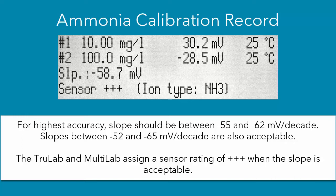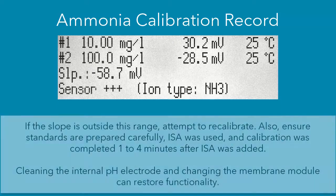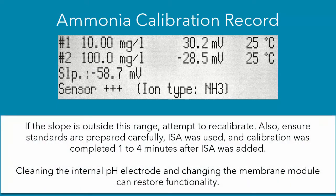So if it is between negative 55 and negative 62, then you have got a really good calibration. So for ours at negative 58.7 mV per decade, that is what we want. If you have a slope between negative 52 and negative 55 mV per decade, that will also work. However, if your slope is lower than negative 52, then you will want to perform routine maintenance such as changing the membrane module.